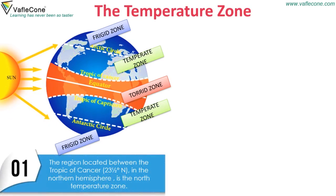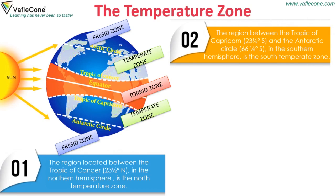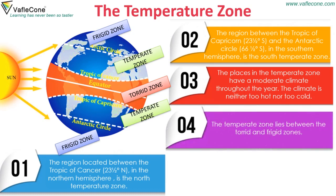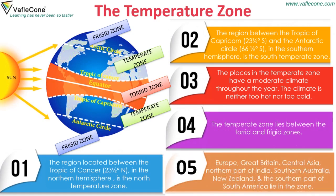The temperate zone: in the northern hemisphere, the north temperate zone lies between the Tropic of Cancer (23.5°N) and the Arctic Circle (66.5°N). In the southern hemisphere, the south temperate zone lies between the Tropic of Capricorn (23.5°S) and the Antarctic Circle (66.5°S). Places in the temperate zone have a moderate climate — neither too hot nor too cold — throughout the year. Europe, Great Britain, Central Asia, northern India, southern Australia, New Zealand, and the southern part of South America lie in this zone.